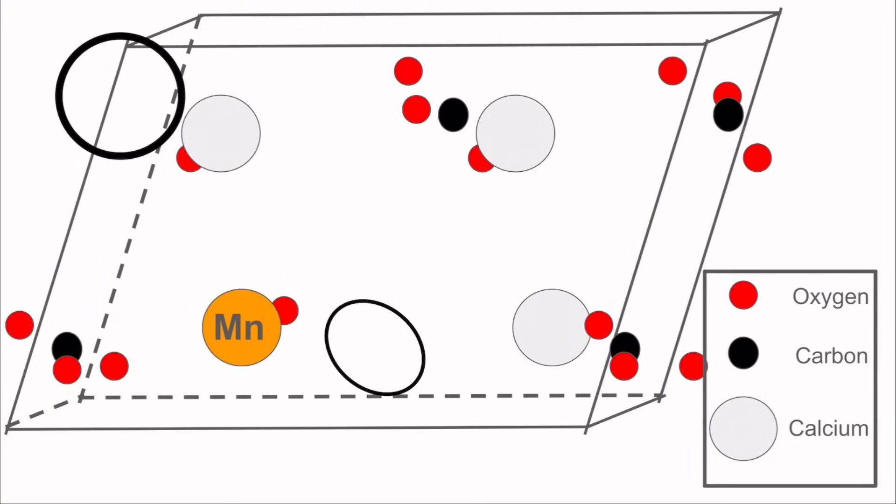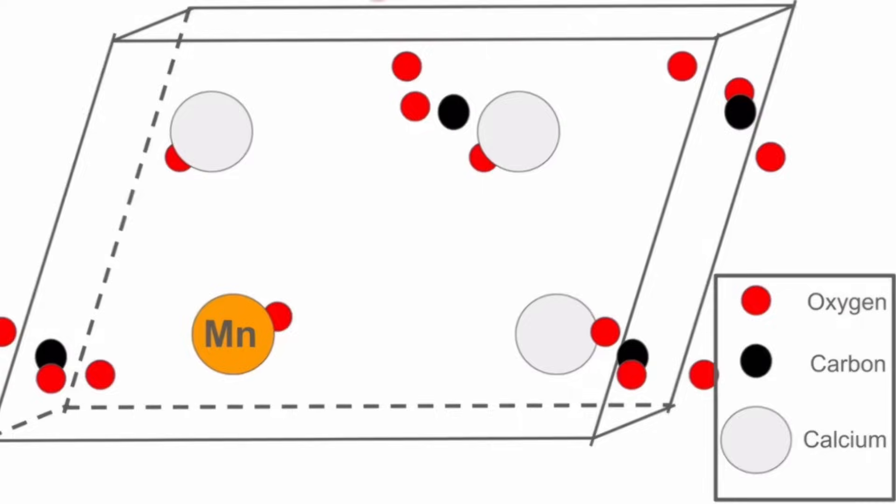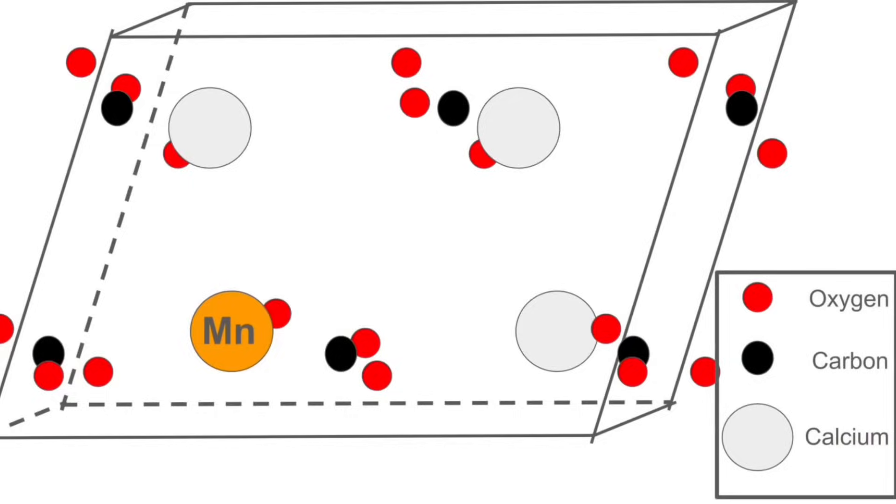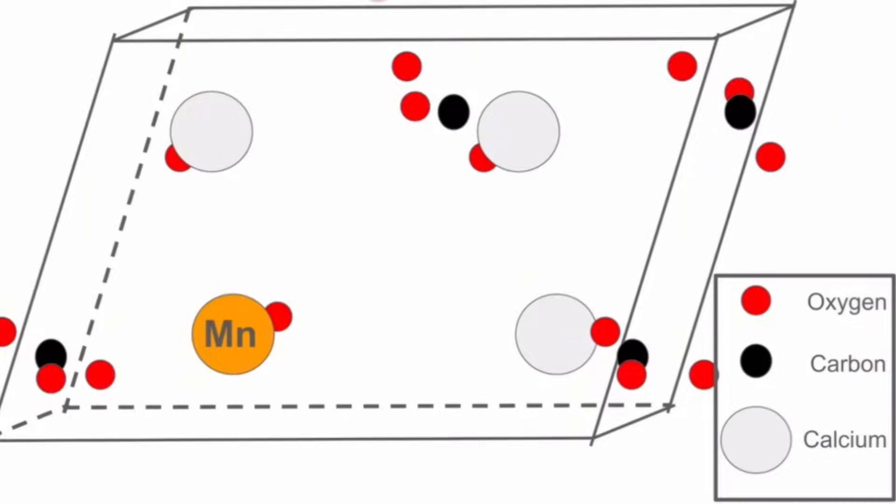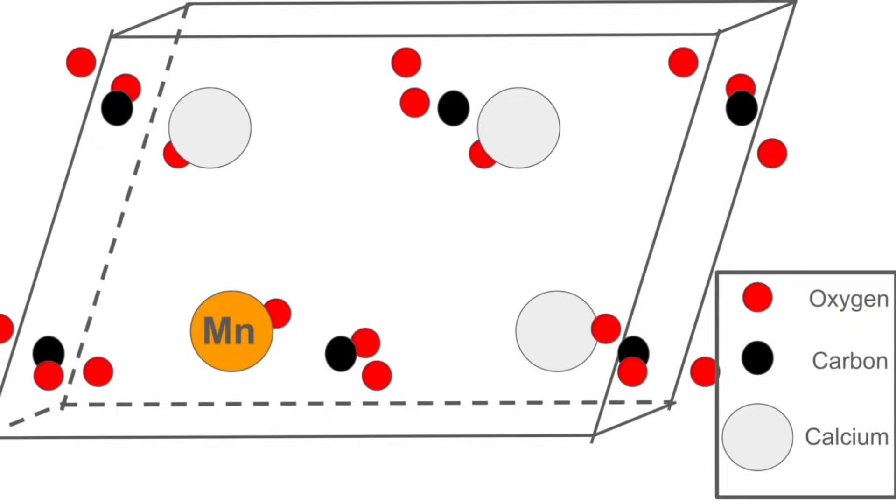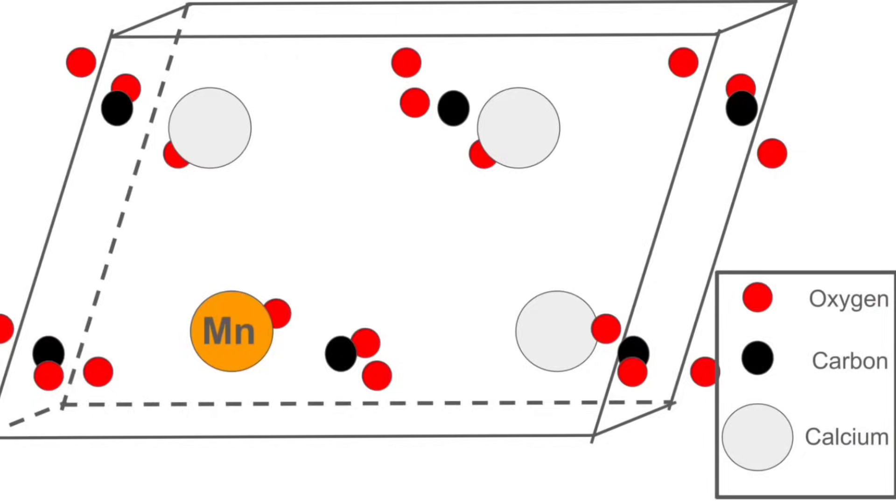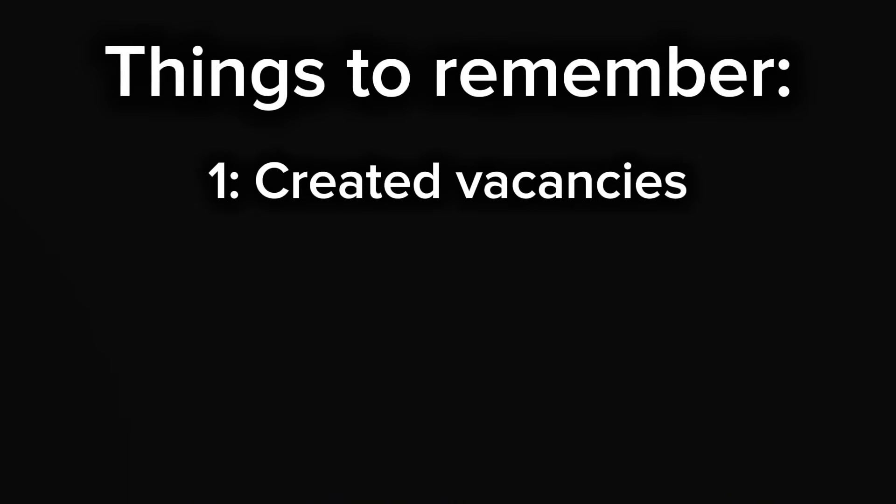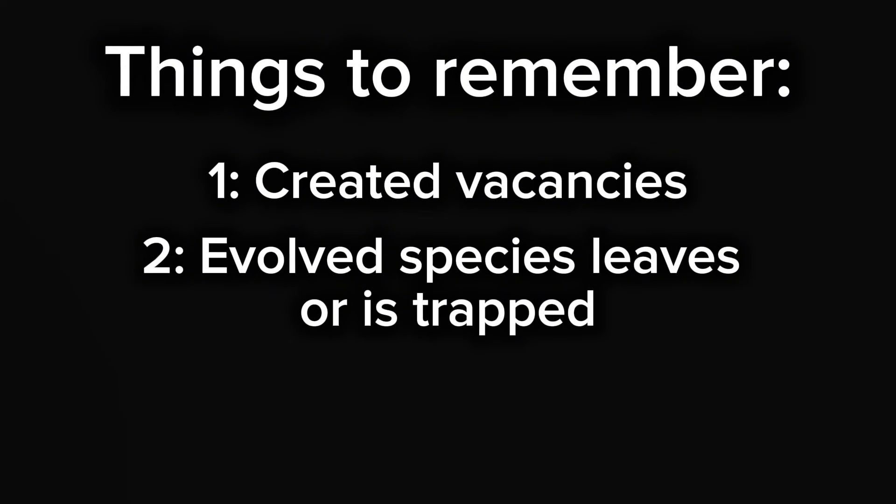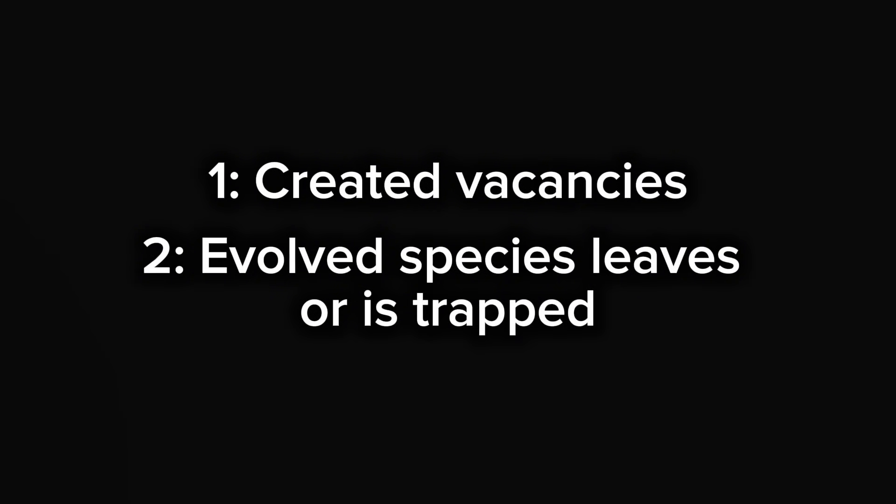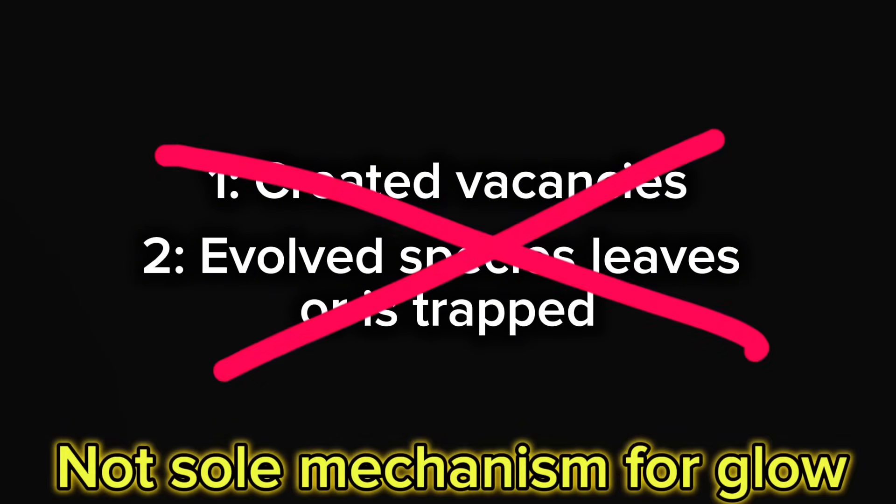And so when they leave, there's a vacancy in their prior position and possibly some trapped species somewhere else in the lattice. And these vacancies aren't really cut and dry. They aren't necessarily just CO2. They could be CO or just oxygen as well. But we'll stick with CO2 for illustration. We created vacancies as well as trapped evolved species. But these aspects alone aren't going to cause the rock to glow.